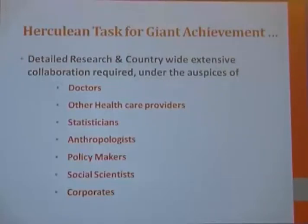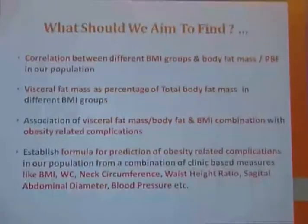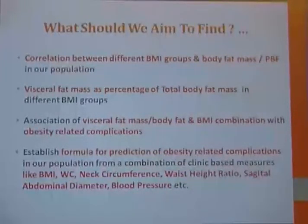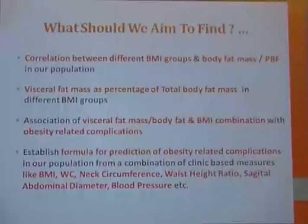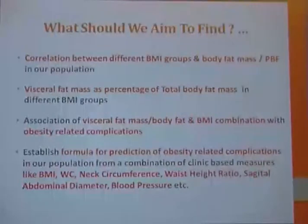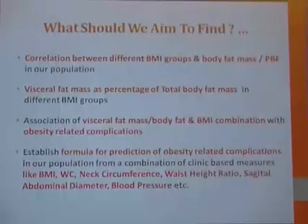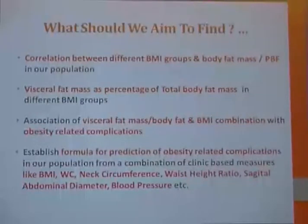This is a Herculean task requiring extensive nationwide collaboration under the auspices of doctors, healthcare providers, statisticians, anthropologists, policymakers, social scientists, and corporates. What should we aim to find? Correlations between different BMI groups and body fat mass and percent body fat in our population, visceral fat mass as a percentage of total body fat in different BMI groups, and associations of visceral fat, body fat, and BMI combinations with obesity-related complications. The goal is to establish a formula for predicting obesity-related complications from clinic-based measures like BMI, waist circumference, neck circumference, waist-height ratio, sagittal abdominal diameter, and blood pressure.